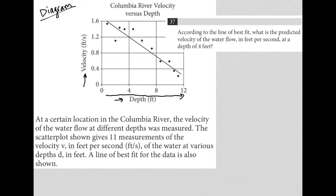We go to a depth of 4 feet, which is here. Because we're looking for the predicted velocity, not the actual velocity at that depth, but the predicted velocity, we just go up to the graph and see where the graph matches up with a depth of 4. It's right here, and that corresponds with 1.2 feet per second for velocity. So our answer here must be 1.2.